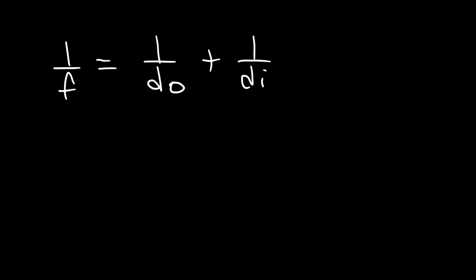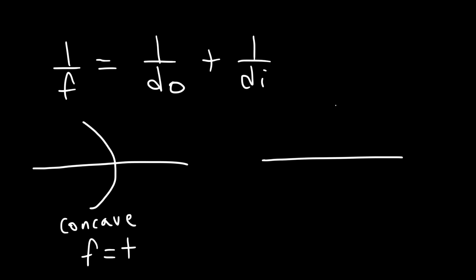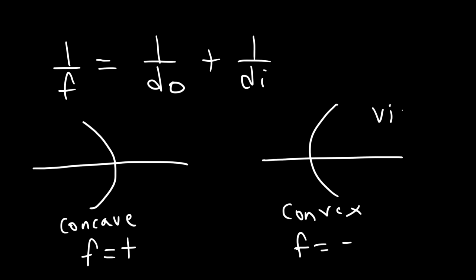Here are some equations to keep in mind for mirrors or lenses: 1/F = 1/DO + 1/DI. This is referred to as the mirror equation for mirrors, and also known as the thin lens equation for converging and diverging lenses. For a concave mirror, the focal length is positive. For a convex mirror, the focal length is negative. Because the focal length is negative, DI will always be negative, and therefore a convex mirror will always produce a virtual image.